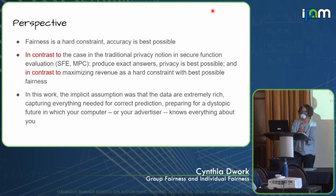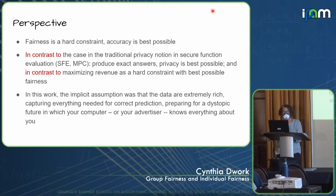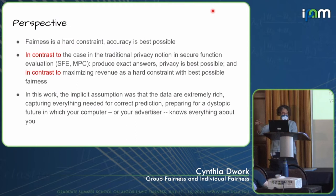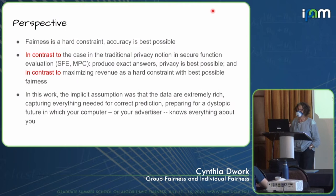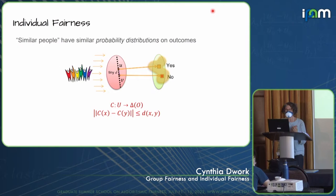The perspective taken in this work is that fairness is a hard constraint, and accuracy or utility is best possible subject to the fairness constraints. This is in contrast to other approaches: in cryptography and secure multiparty computation, you insist on the right answer and privacy is the best you can do given that answer. In some economics approaches, you maximize revenue and then try to be as fair as possible. Here we take the other extreme — fairness is the first-order object, and everything after that is what's best you can do. We were imagining, in this early work, that the truth really was discernible from the data.